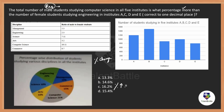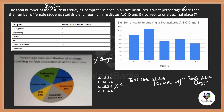Percentage increment is nothing but the difference of the two mentioned entities: the total male students in the branch of computer science in all the institutes, minus the number of female students studying engineering in institutes A, C, D, and E — upon the compared value, multiplied by 100. That's the formula we use whenever there is a comparison. Now what is the compared value? The denominator is the compared value.